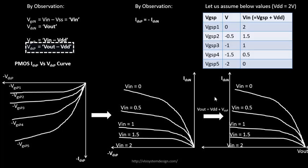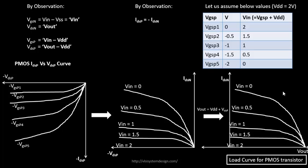Once we complete the conversion of these graphs as a function of Vin, Vout, and IDSN, we call it the load curve — this is the load curve for the PMOS transistor. Everything is now a function of Vin and Vout, with no dependency on VGSP, VDSP, or IDSP. The next step is to do the same for the NMOS transistor, and then we'll have both PMOS and NMOS curves on the same page to derive the CMOS voltage transfer characteristics.